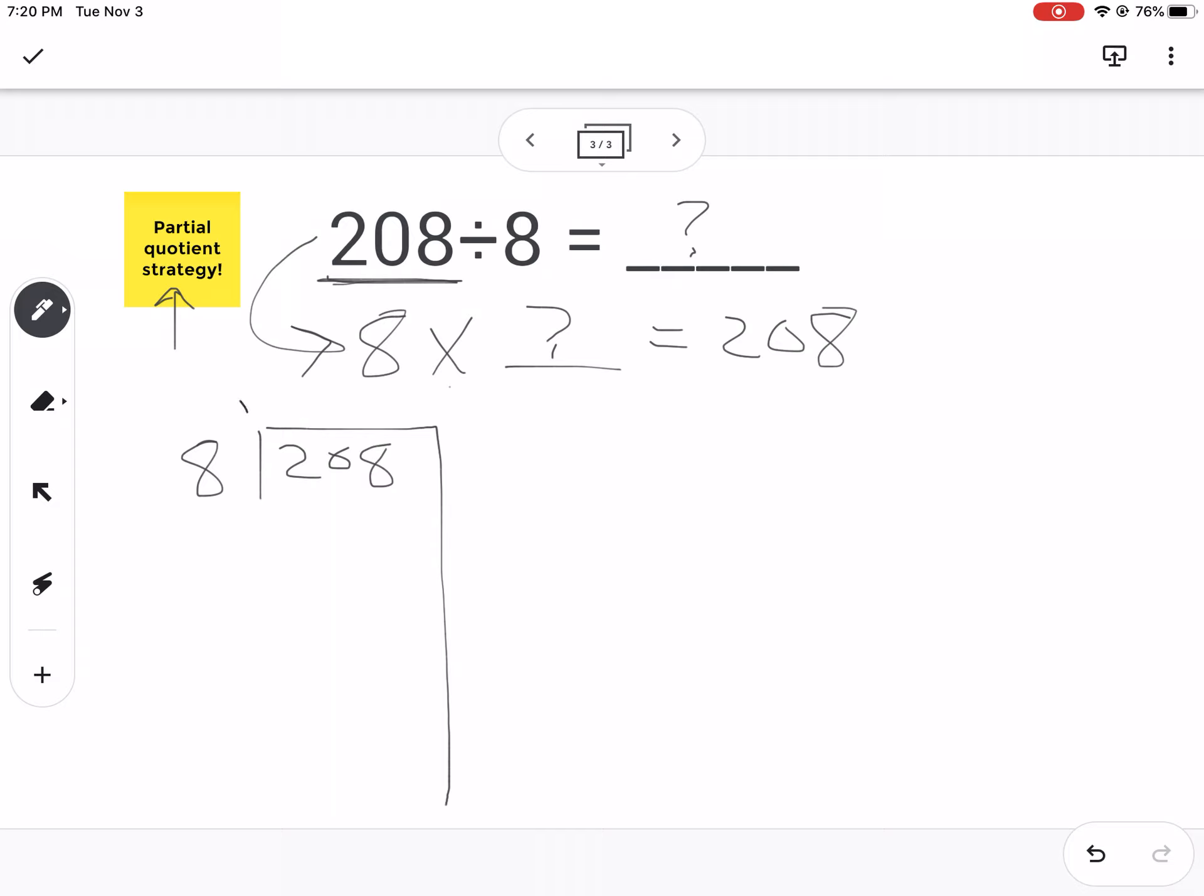And now we're still going to figure out 8 times what number is 208. So we have to get as close as possible. So this is where we're going to do some vomiting of our 8 times tables. We're focusing on our 8 times tables because that's what we're dividing by.